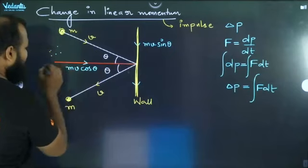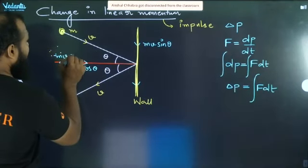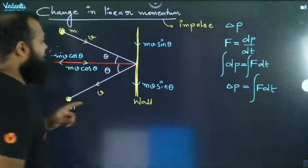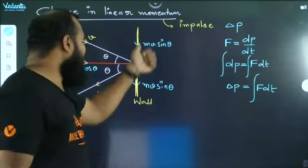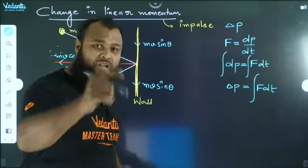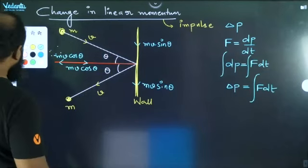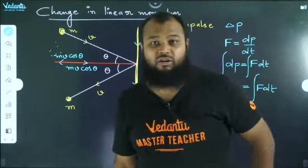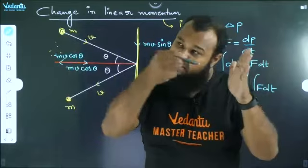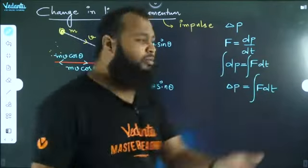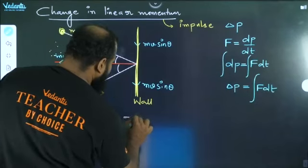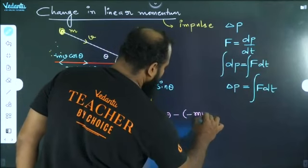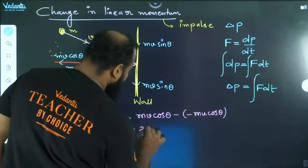The downward direction is mv cos theta. If you observe along the wall — mv sin theta along the wall, there is no change in momentum. The incident direction will allow it in this direction; reflect theory will allow it in the opposite direction. Change in momentum delta P is equal to mv cos theta minus of minus mv cos theta, which gives 2mv cos theta.